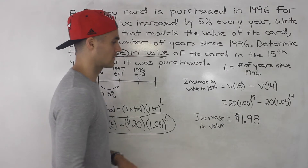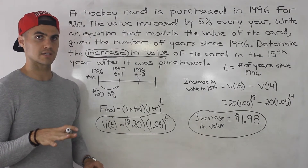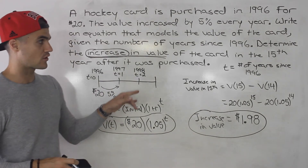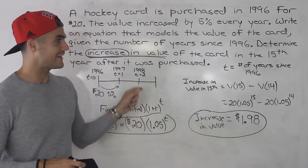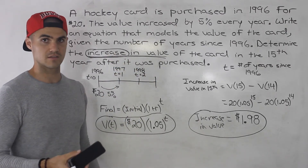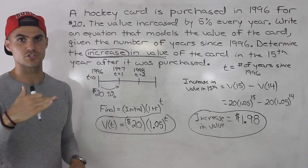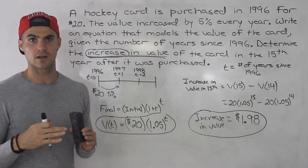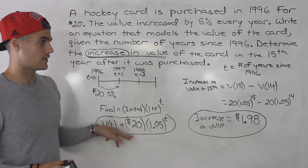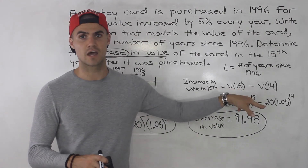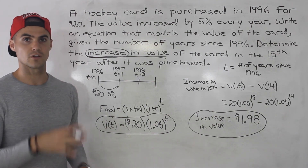When you calculate that in your calculator you get $1.98, which is the answer to the second part. So be careful with questions like this — they're not asking for the value of the card at 15 years, which would just be V(15). They're asking for the increase in value in the 15th year, so you find V(15) minus V(14). The same applies to depreciation problems — for example, how much did a car depreciate in the 10th year would be V(10) minus V(9).